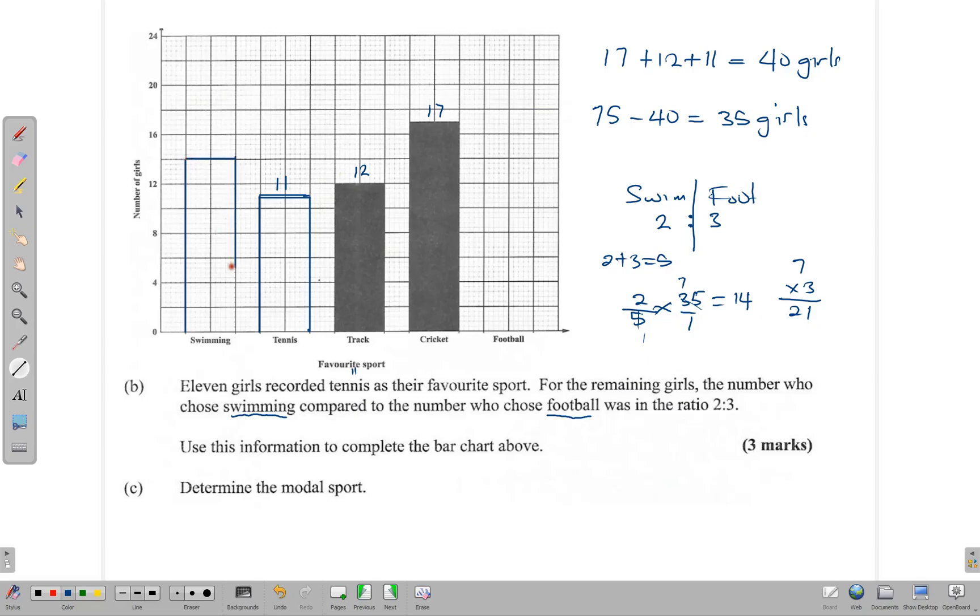For swimming, swimming is 14, and that one is easy to draw because it stops right here at 14. And football is 21, so we go to 20 here and then go halfway through that box. There we go, and we drop that line there. We have completed our bar graph where this is now 21.